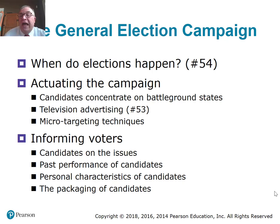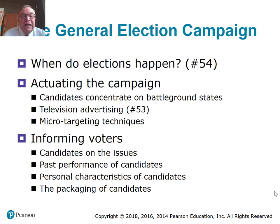Question 54: when do presidential elections occur? It's the first Tuesday after the first Monday in November — so the Tuesday can't be the first, it would be the eighth at earliest. In terms of actualizing the campaign, candidates really focus in on battleground states where there are members of both parties. There are seven or eight key states the candidates spend a lot of time in, and typically Ohio is one of those states.